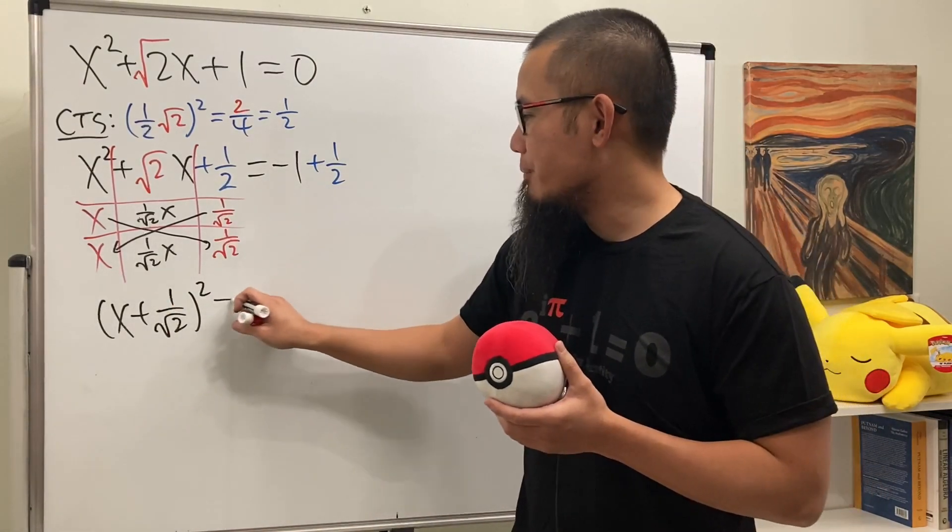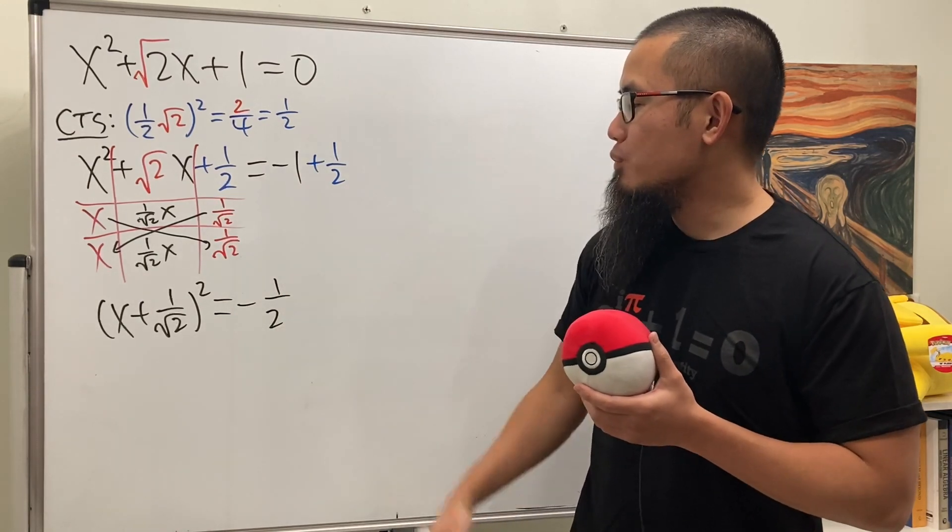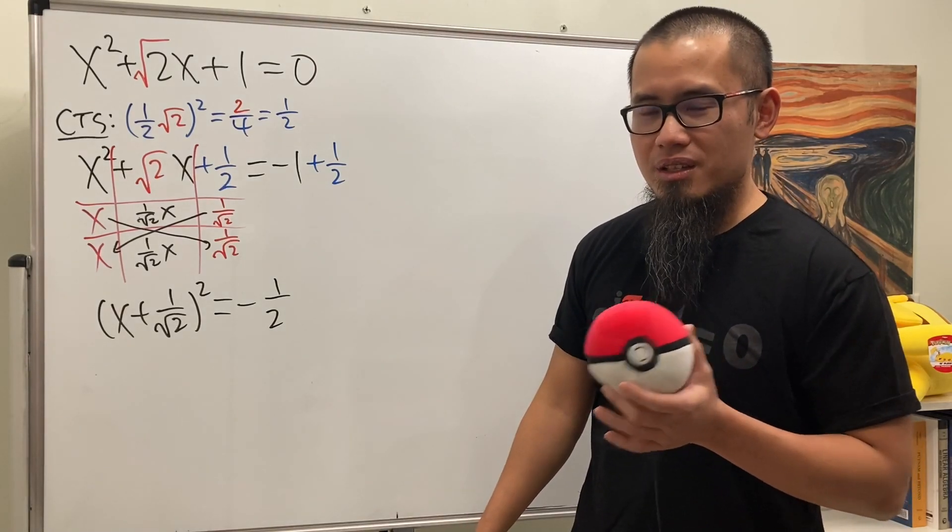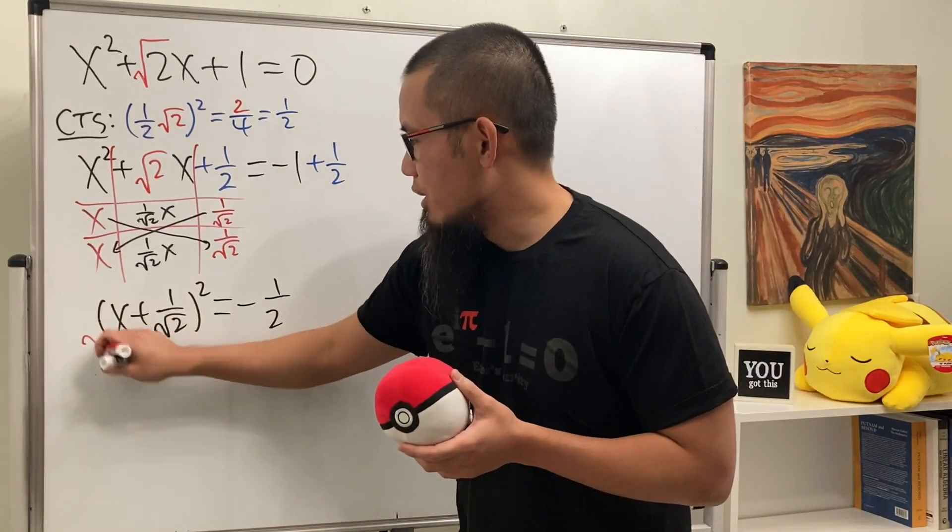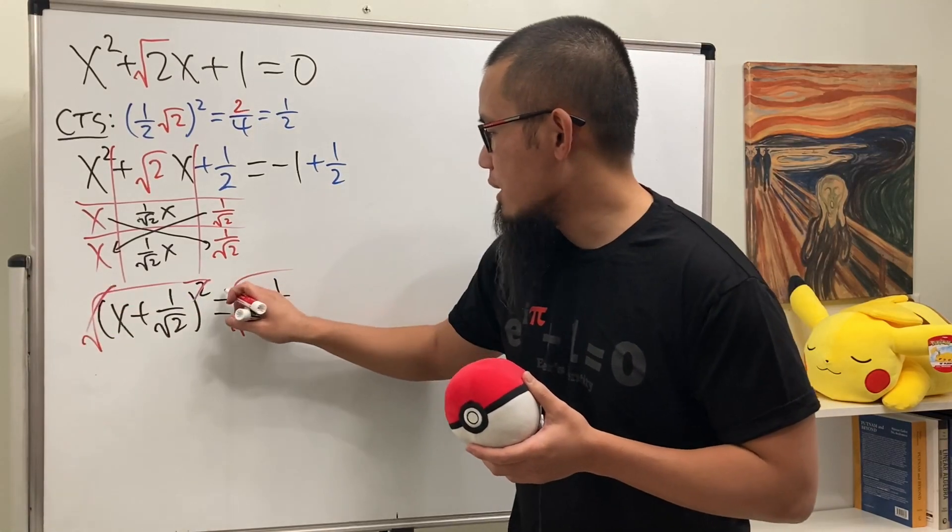this right here becomes x plus 1 over square root of 2 squared. And on the right-hand side, that's going to be a negative 1 over 2. It's negative. But it's okay. Let's use complex numbers. Still, go ahead and take the square roots on both sides. Cancel, cancel. And don't forget the plus or minus.